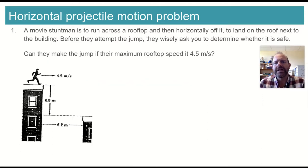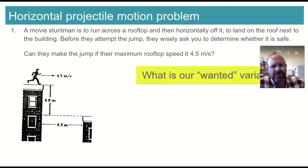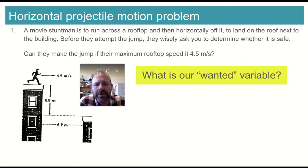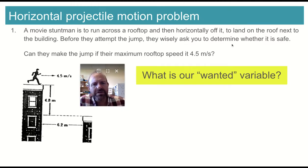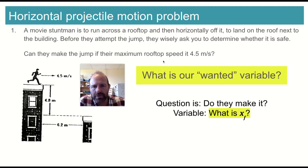Here's an example problem of horizontal projectile motion. Ms. Kiltz also solved this with pen and paper, so if you prefer that method, go for it. A movie stuntman is going to run from one rooftop to the other — at least attempt it — and we want to know if that is safe. We have some given information, and the first thing you want to do after diagramming it is think about what is our wanted variable. Do they make it is our big question, and the real question is where do they end up — x-final? Do they get all the way across to the next roof once they've fallen?